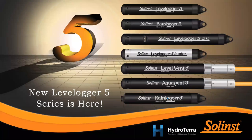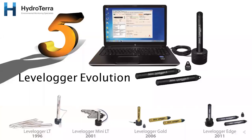What's been transferred over from the Edge series is essentially represented in the Solinst Levellogger 5 series. We still have the Levelloggers, Barologgers, LTCs, Juniors, Vented loggers — Levelvents and Aquavents — and the Rainlogger. That whole series from the previous Edge has been transferred across with some updated features. There's been quite a long evolution of these Levelloggers — some of you may even have Levellogger Golds still in the field being used well over 14 years later, which indicates the robustness of the product.